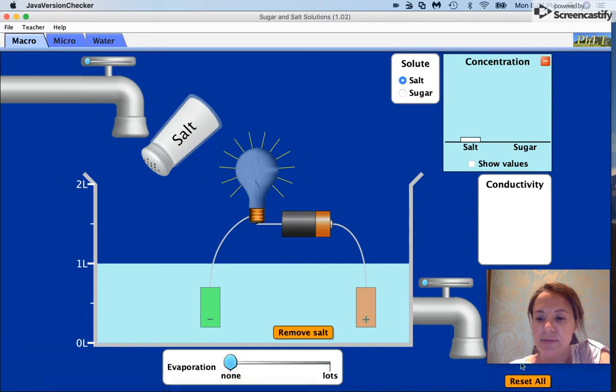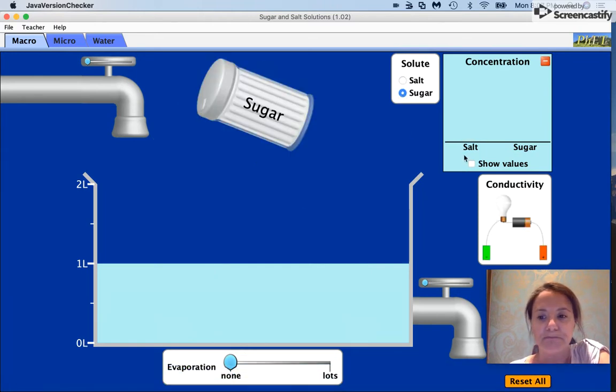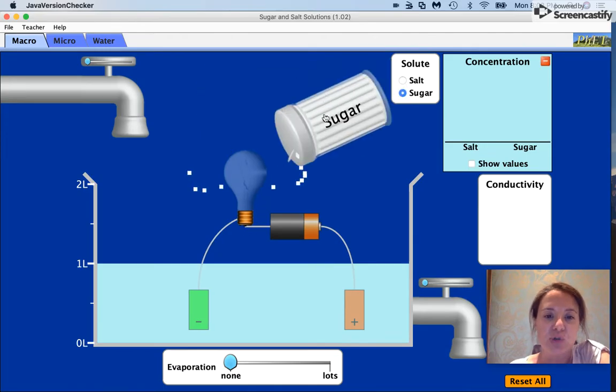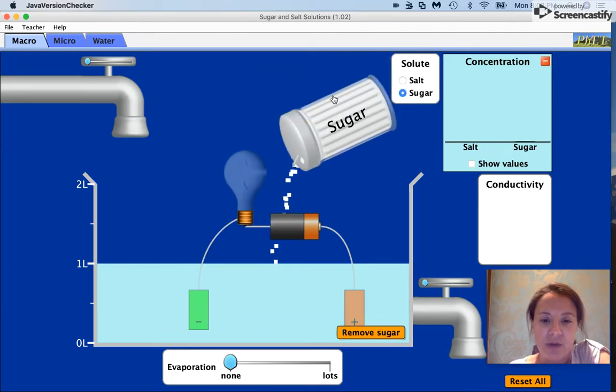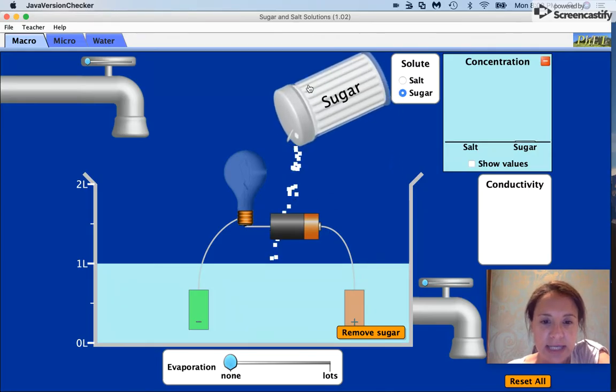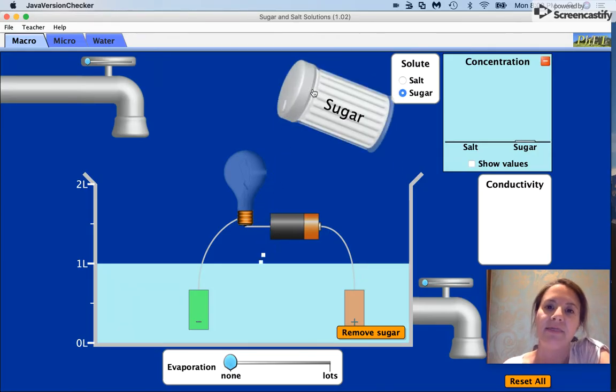Let's reset that and add a little bit of sugar. Add our conductivity apparatus, add some sugar, and that's our covalent compound. No matter how much I add, it doesn't appear as if we can get that conductivity apparatus to light up.